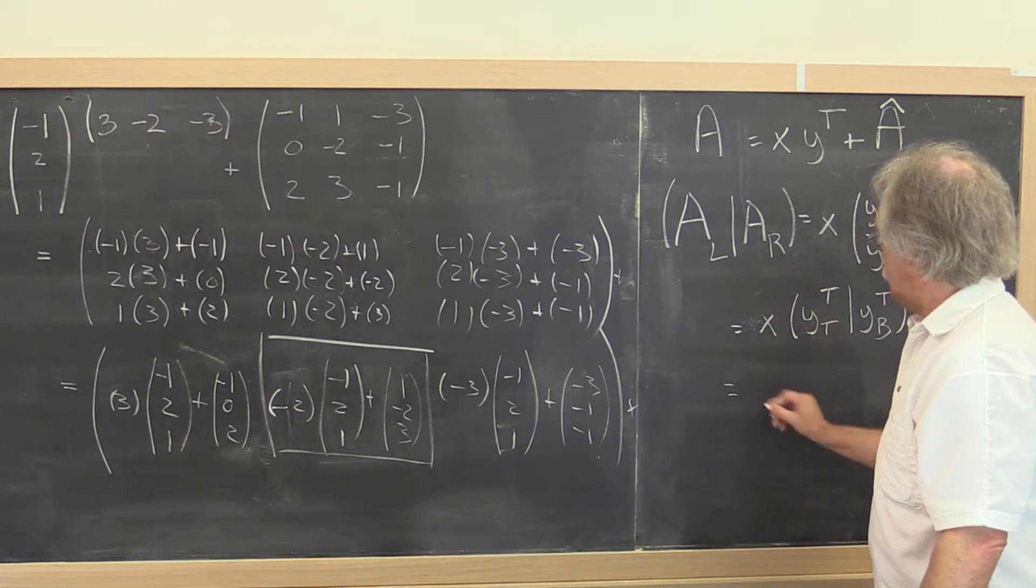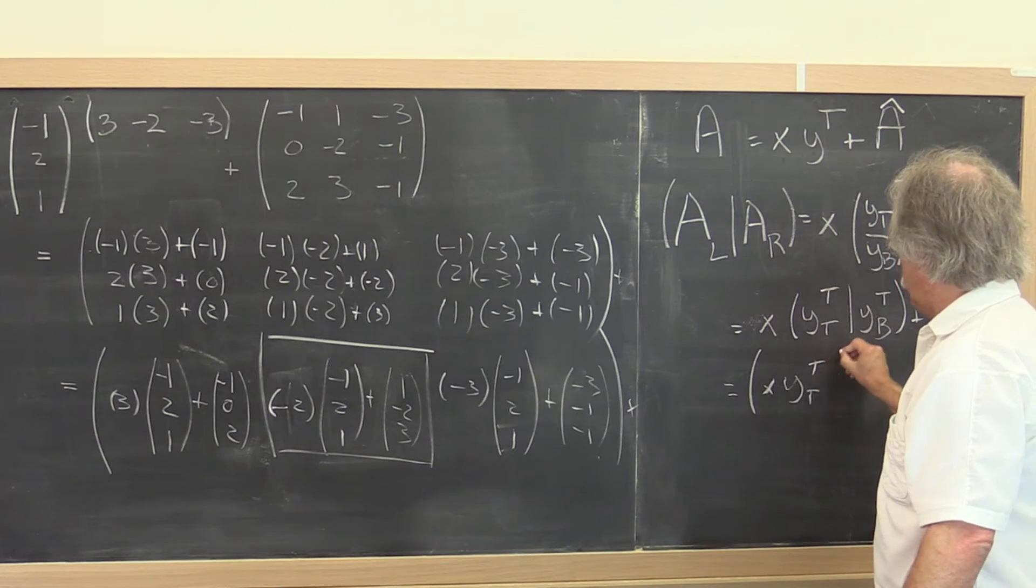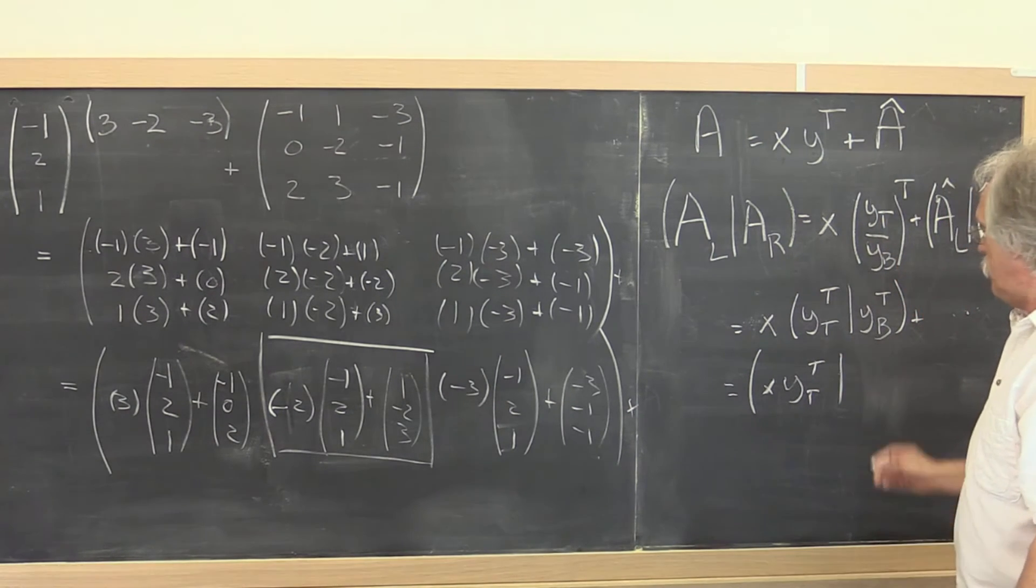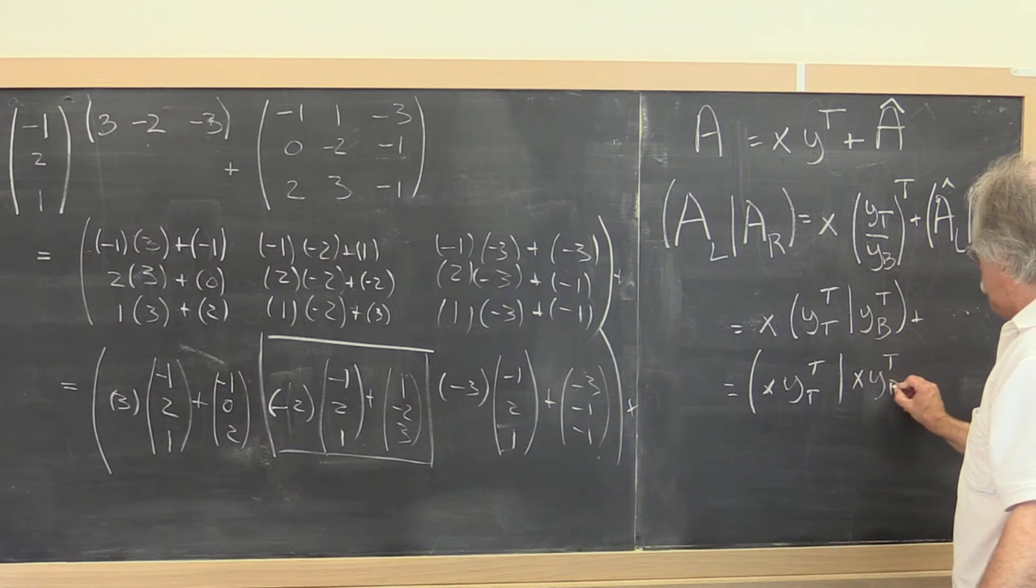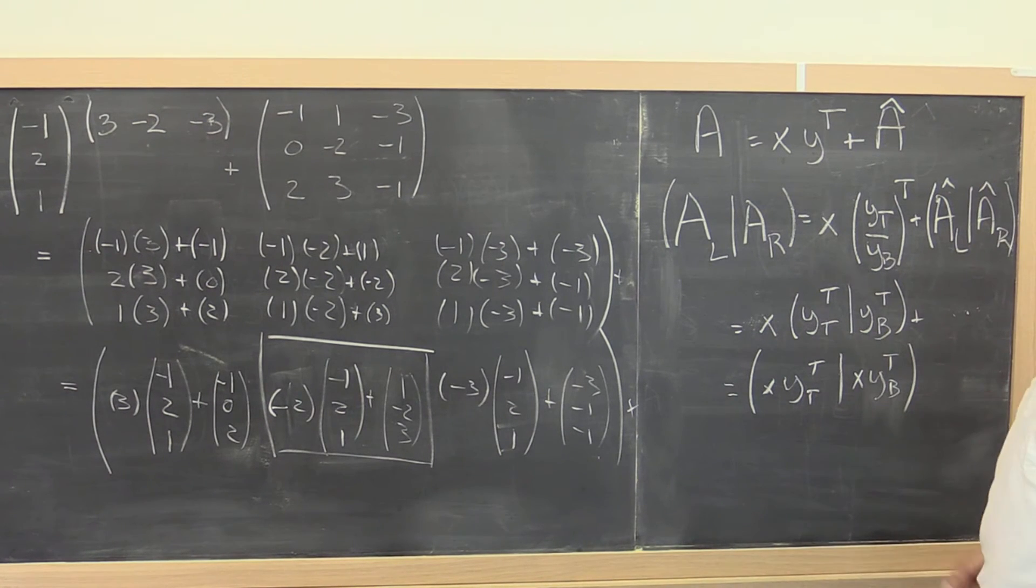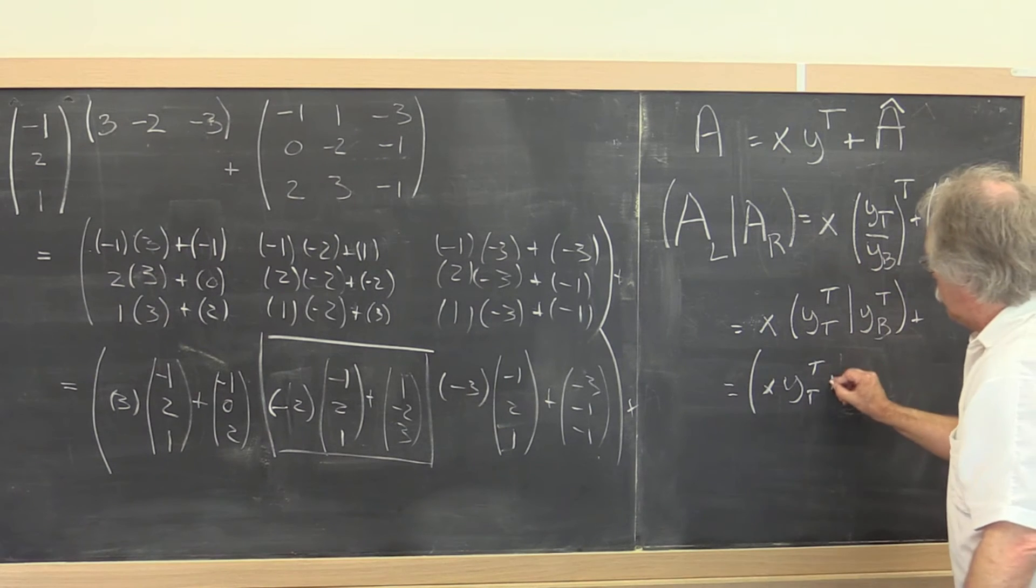And if you multiply that out, then you get x times y top transpose for the left part, and x times y transpose bottom right there for the right part, which you have to add to that. And if you then add it to that, then you get this right here.